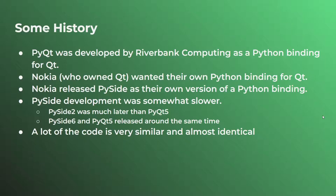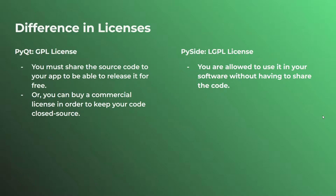If the code is very similar and they both sit on top of Qt for Python, how do you choose between the two? The major difference between the two is actually in the licensing — each of them sits under a different license.